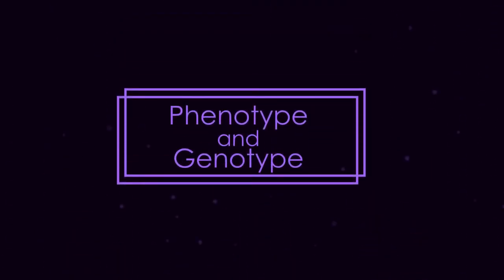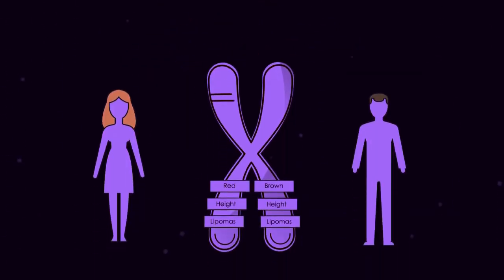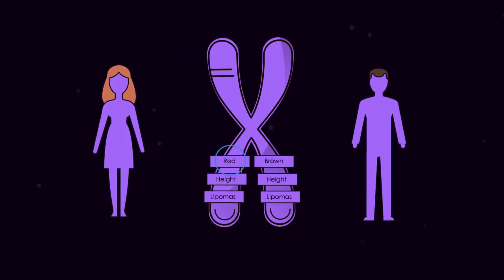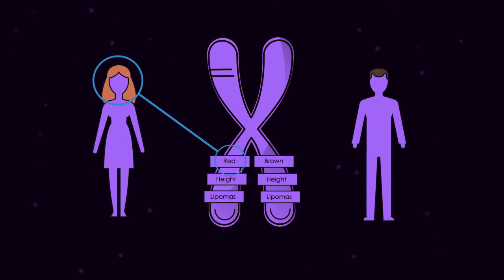The phenotype is the outward appearance or characteristics of the organism depending upon genes. So, the phenotype for the red hair gene is actually having red hair.